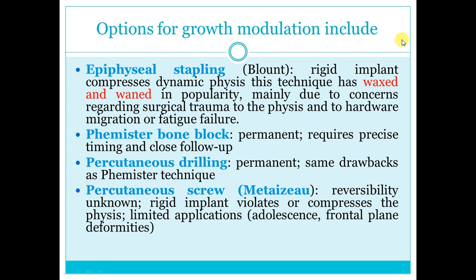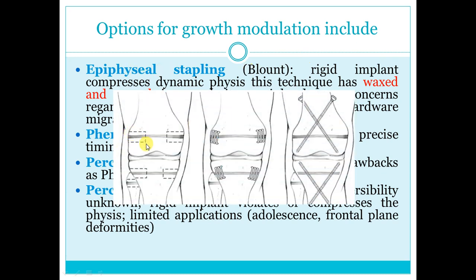Old methods of growth modulation include the Phemister bone block, drilling the full length of the physis, or using staples. Staples applied unilaterally correct coronal deformity; applied bilaterally they are used for leg-length discrepancy management. For valgus correction, staples are placed on one side; for varus of femoral or tibial origin, on the other side.